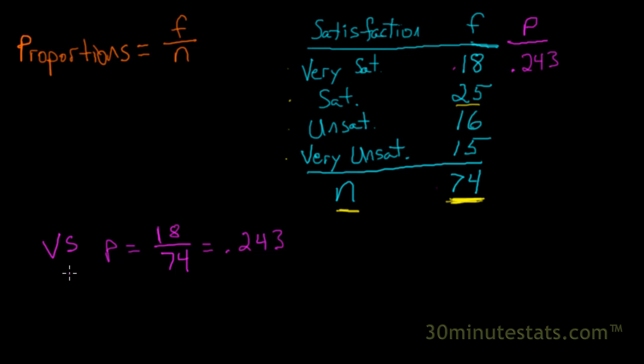We could do the same thing then for the satisfied group, and say that the proportion is going to be 25 divided by 74, which is going to be 0.338. And we could list that out here.